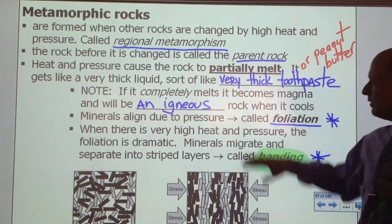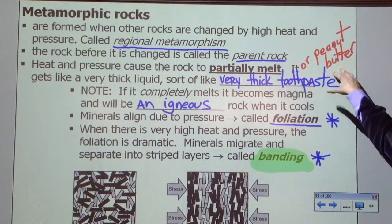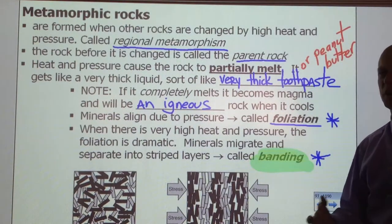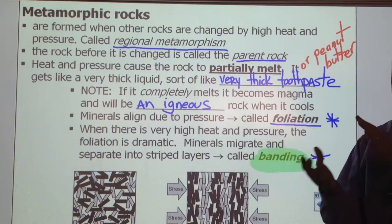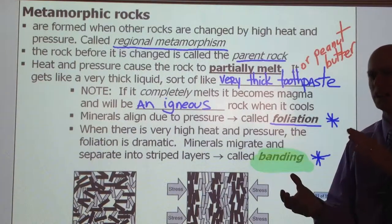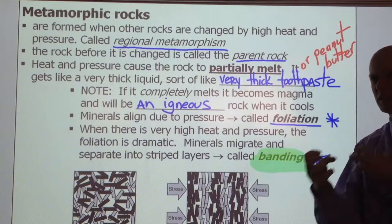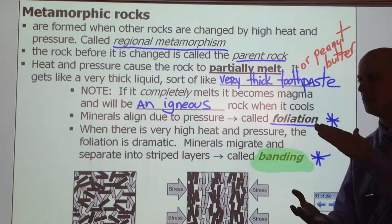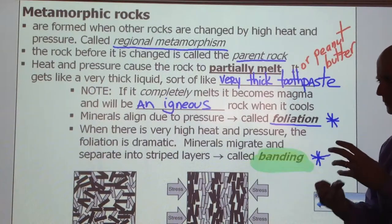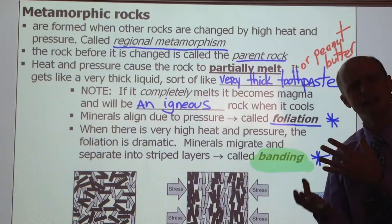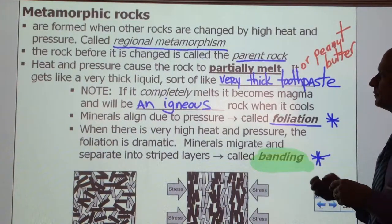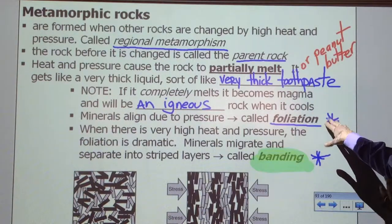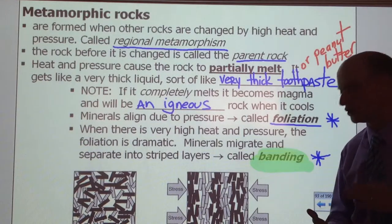The rock gets a consistency like very thick toothpaste or peanut butter — like peanut butter you put in the refrigerator that gets really thick. It's a solid, but it can sort of move. We often call it plastic sort of movement. When we say plastic, I mean like heated plastic. Note: if it completely melts, it becomes an igneous rock. The minerals will align due to pressure, and this is called foliation.